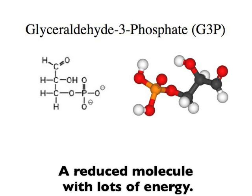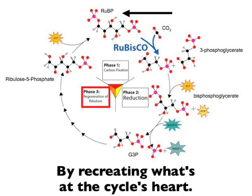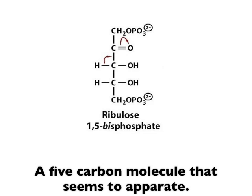Part 2 is the payoff that you will see. It produces the molecule G3P — a reduced molecule with lots of energy and a starting form for all the molecules cells need. Part 3 sets up conditions for the cycle to start by recreating RuBP, ribulose bisphosphate, a 5-carbon molecule.